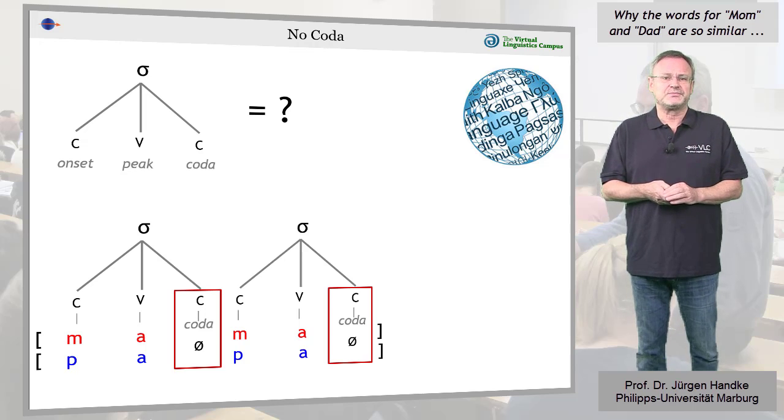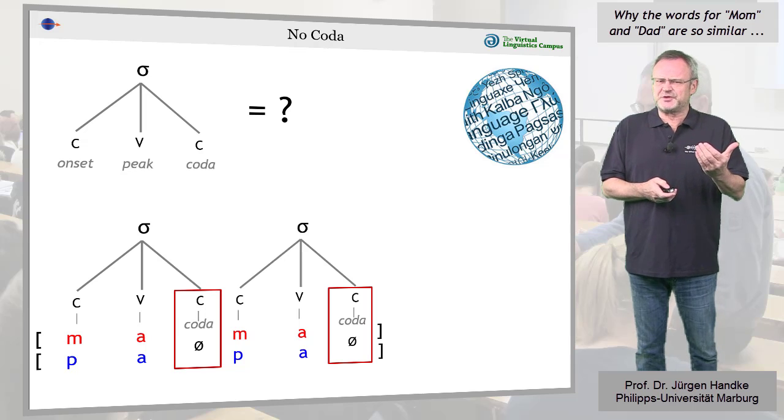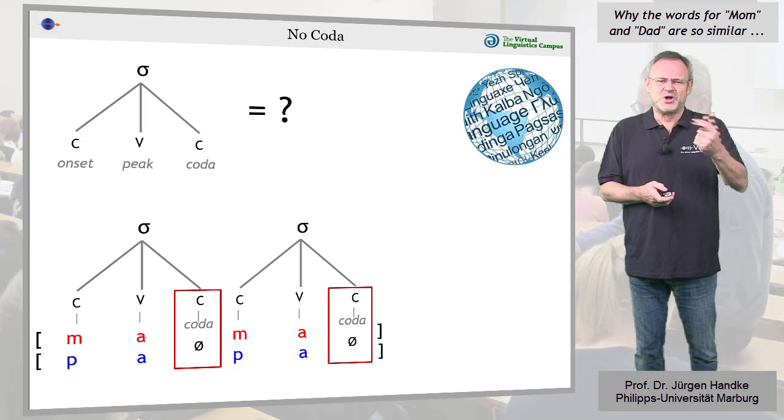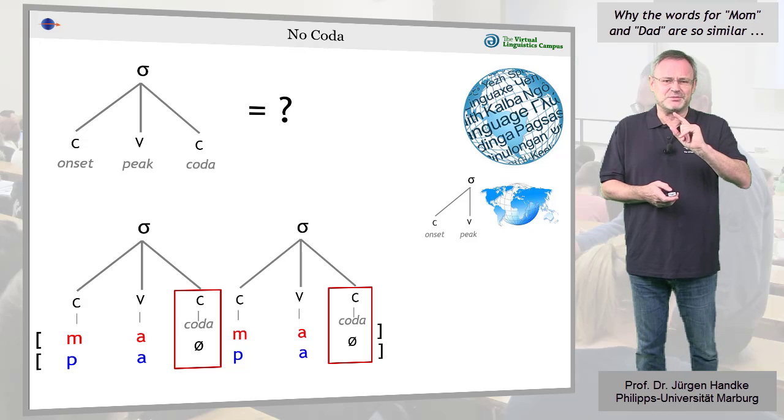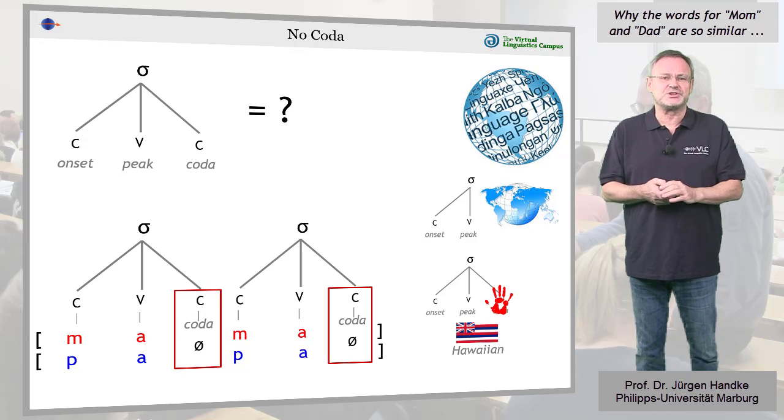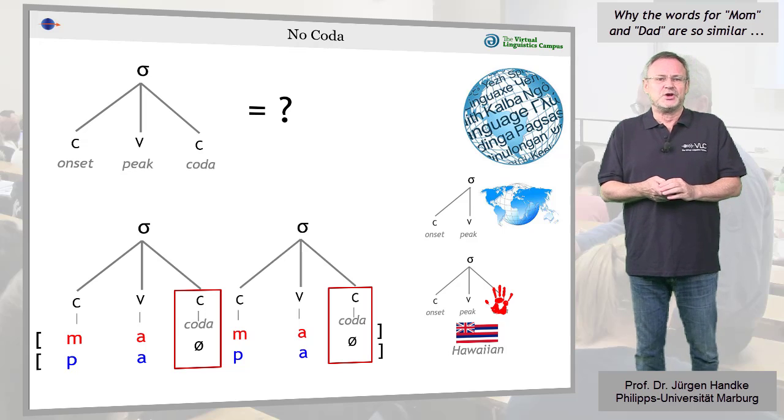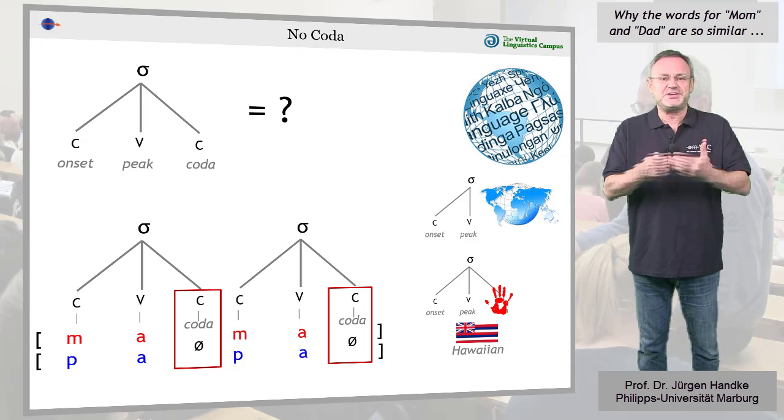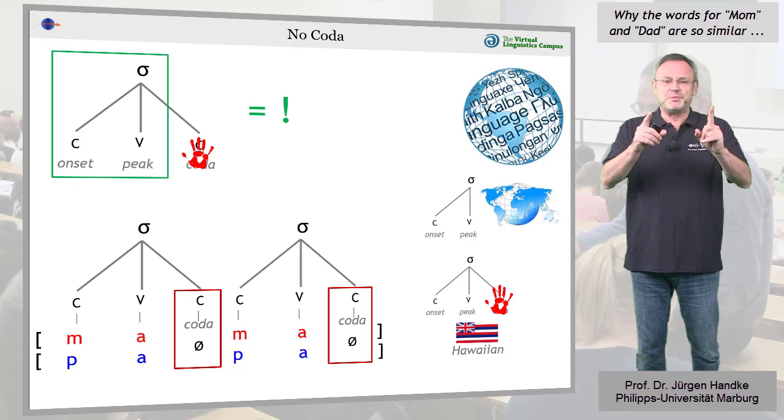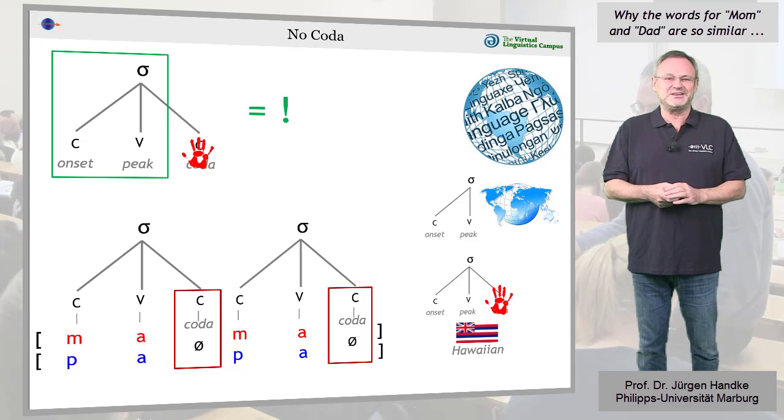Well, all languages have open syllables, but not all of them have closed syllables—that is, syllables with a coda. For this reason, and for reasons of ease of articulation, open syllables are more likely to occur first.